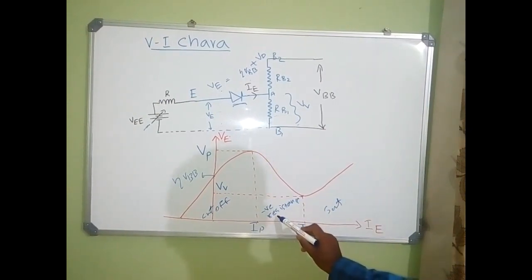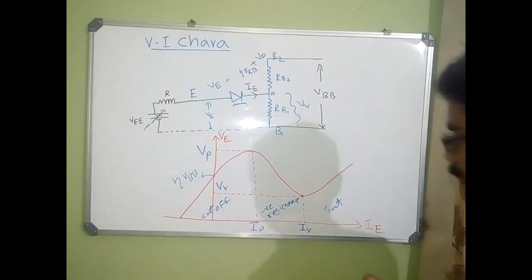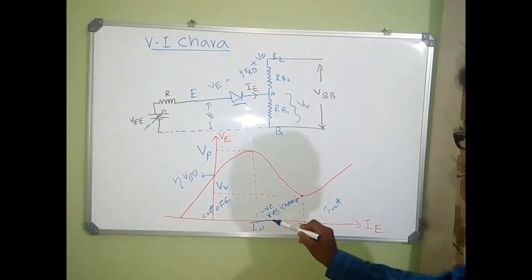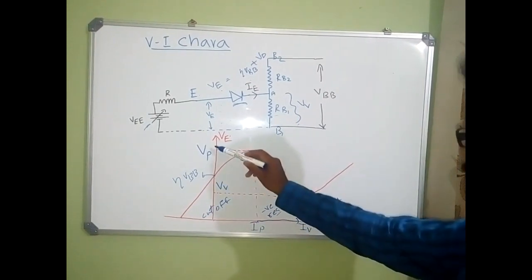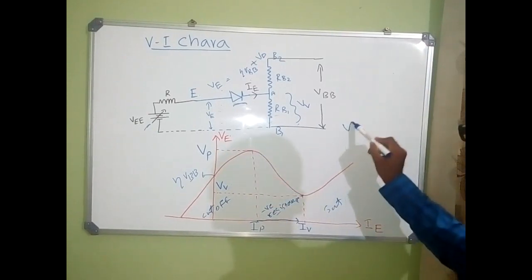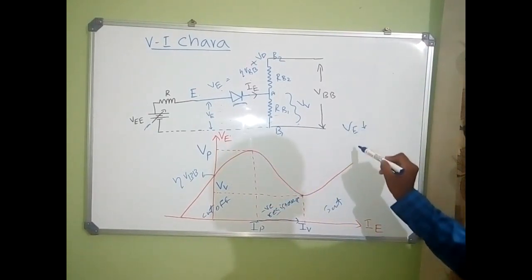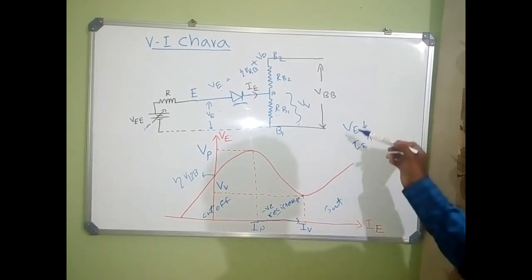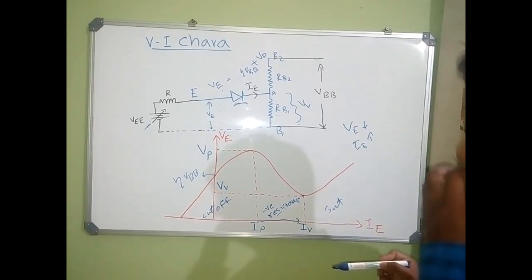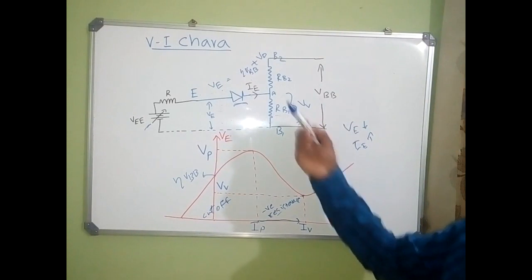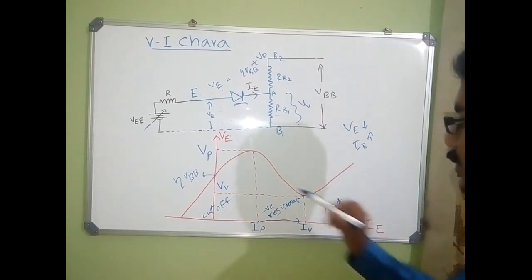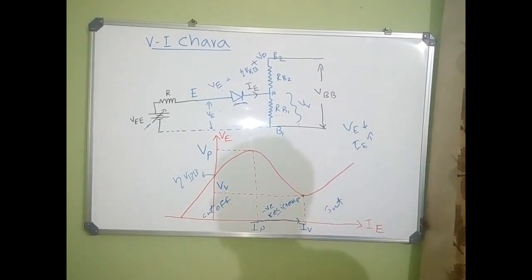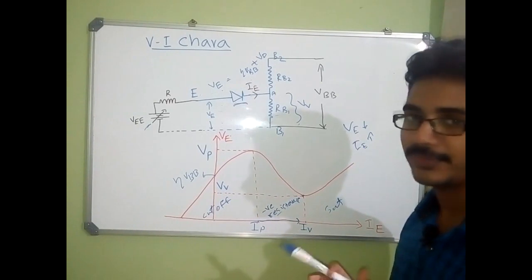This region is called the negative resistance region because when the voltage VE decreases, the current IE increases. In normal cases, when voltage increases, current also increases — that is positive resistance. Here, when VE decreases, current increases, so it is called the negative resistance region. This is all about the VI characteristics of UJT.